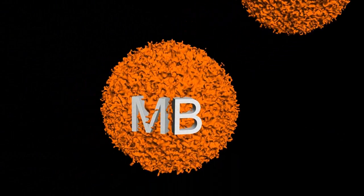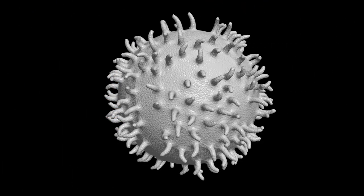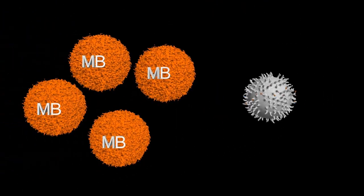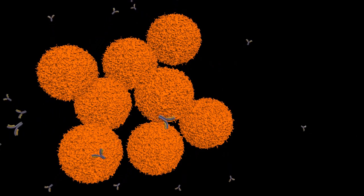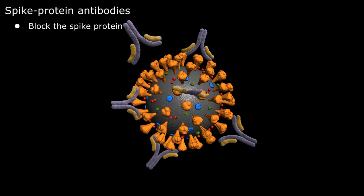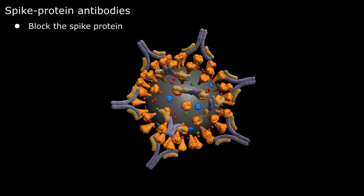Memory B cells are created and subsequent infections with the actual SARS-CoV-2 virus activate the memory B cells, quickly ramping up antibody production to the spike protein of the actual virus. The antibody binding to the spike protein may physically block the virus from entering the host cell through the ACE2 surface protein or could mark the virus for destruction by other members of the lymphocyte community.